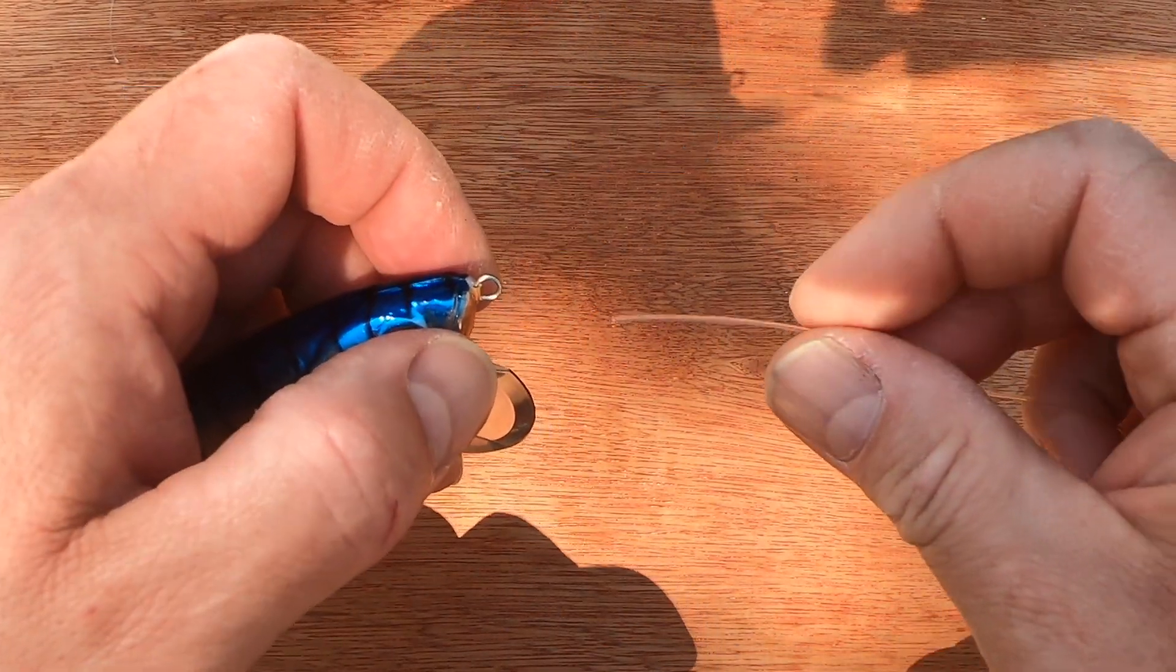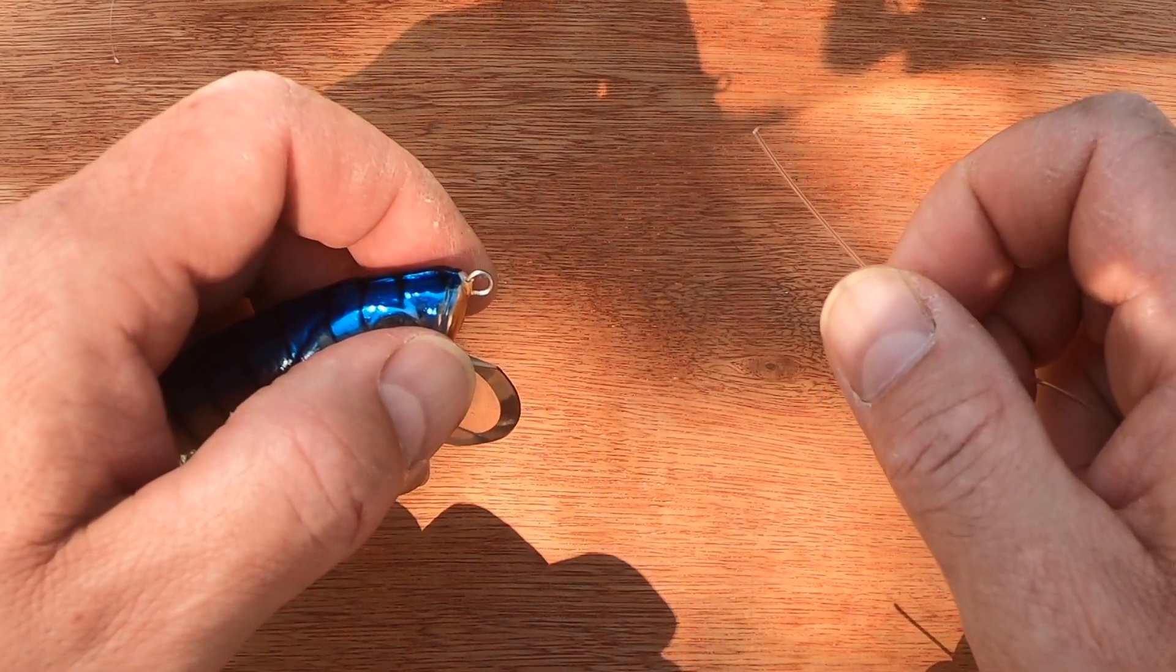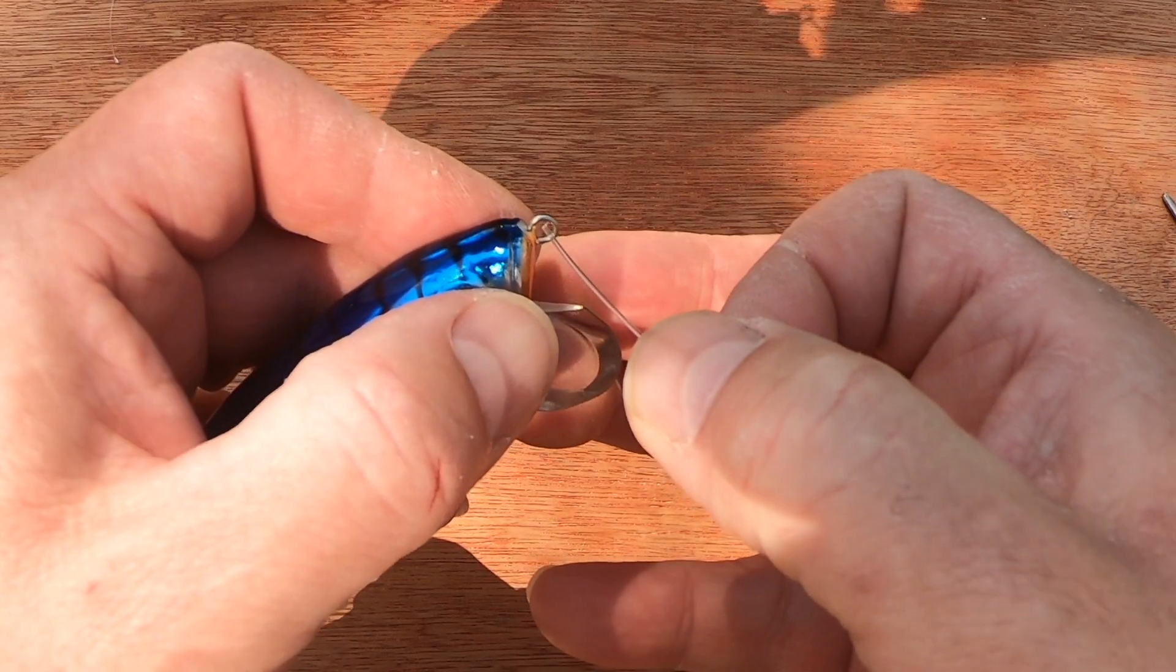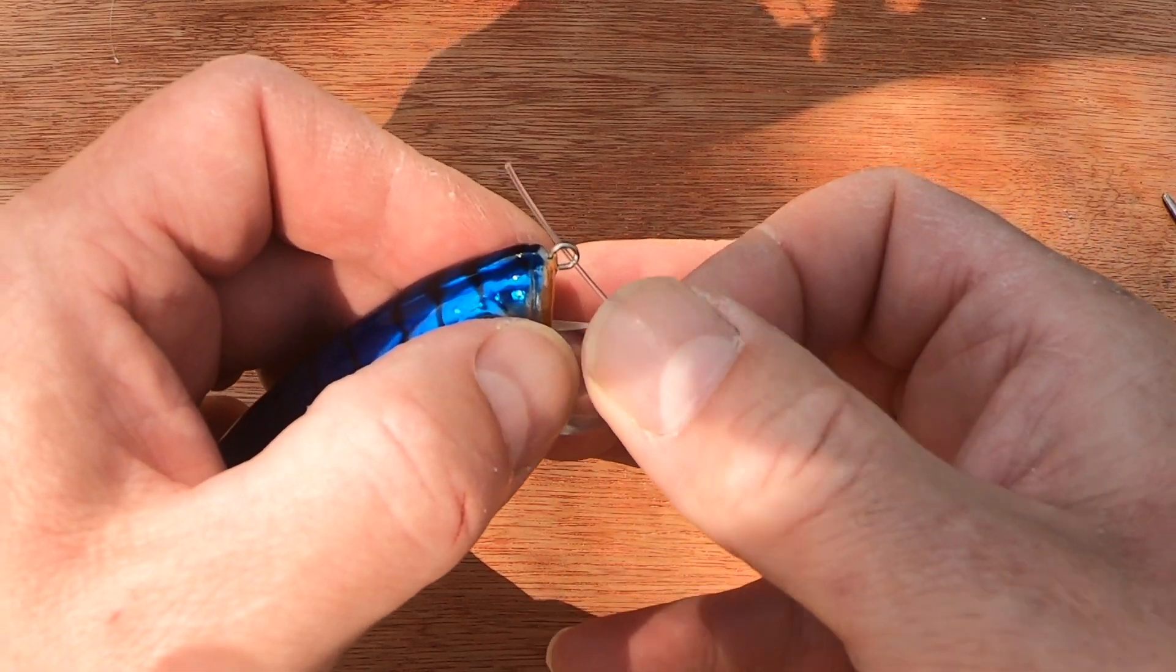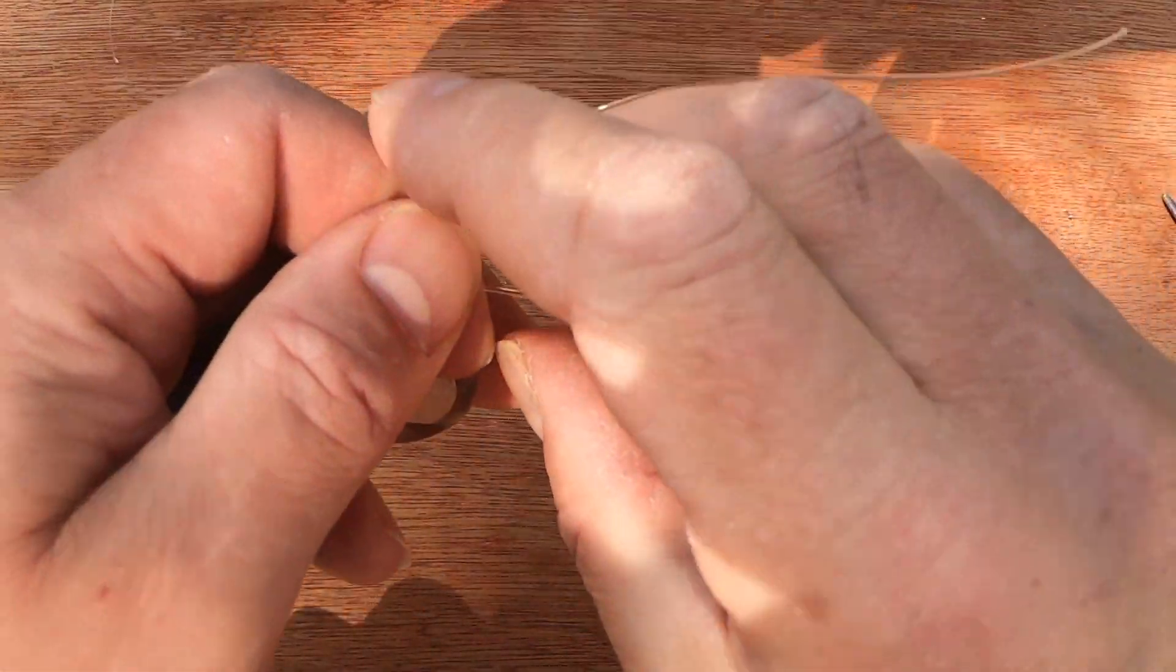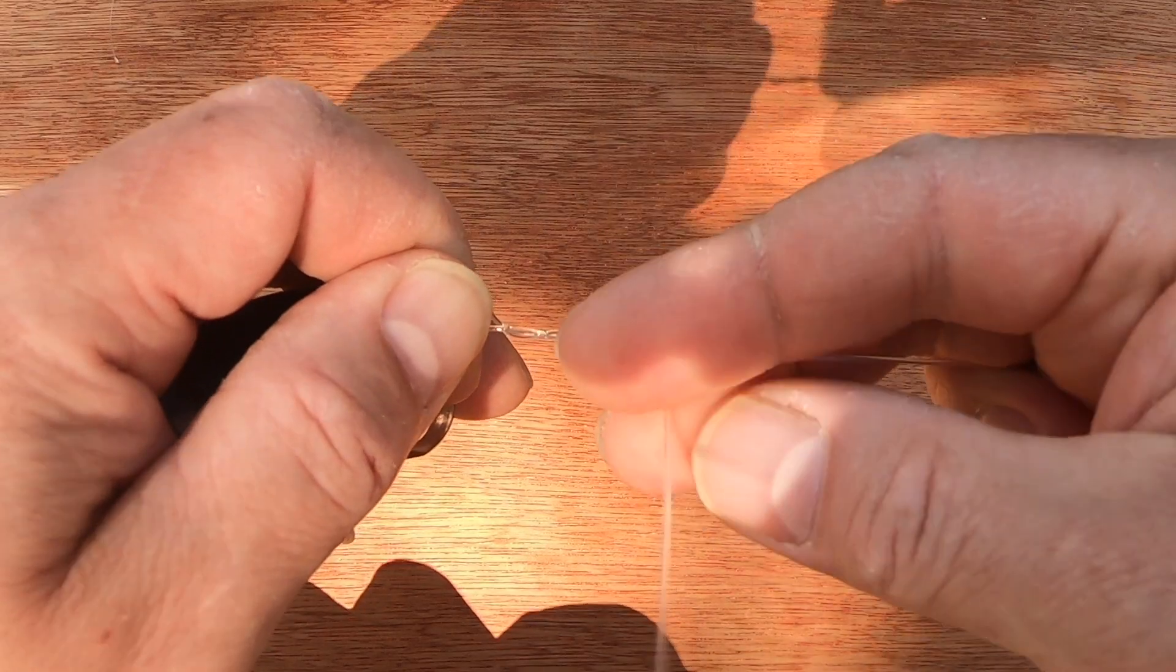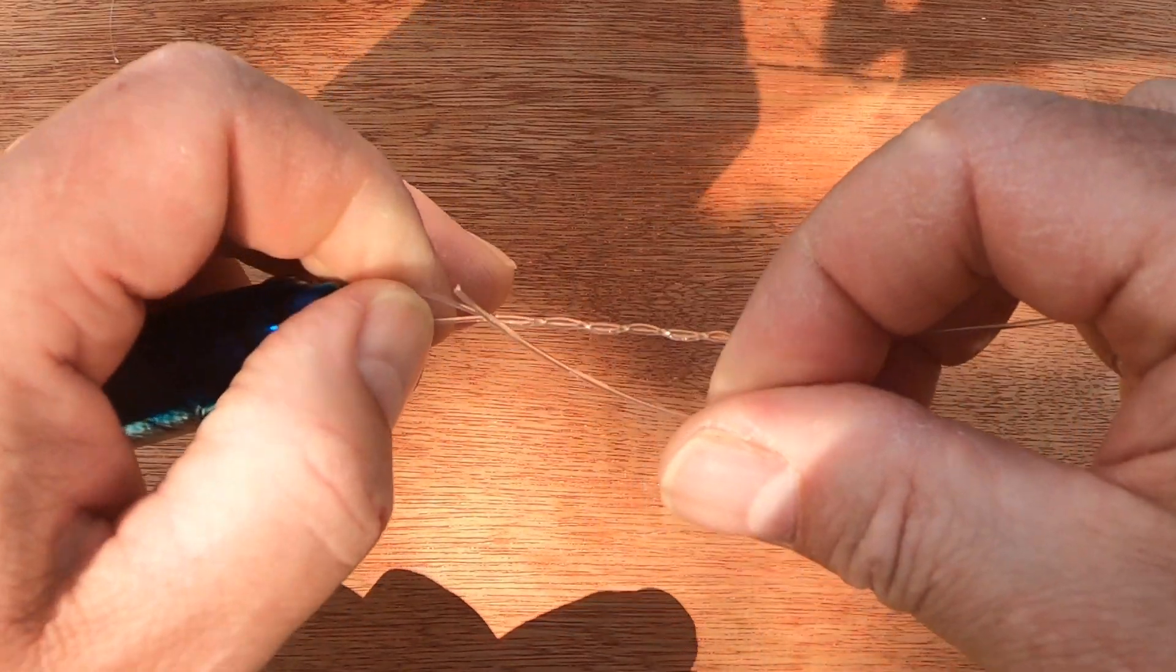So the final knot that I use a lot, these knots will cover pretty much all situations I fish in or you may come across, is for small hooks, fine lines. I use a blood knot. Now a blood knot is a very simple knot, a lot of you probably already know it. Pass, I'm using a lure as a demonstration here, but this is for small hooks and swivels. Pass the line through the eye, get yourself a decent tag end.